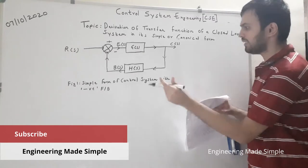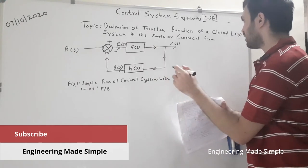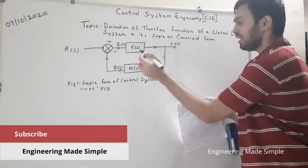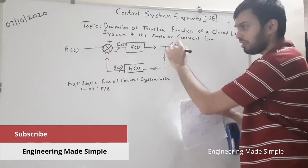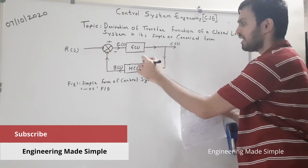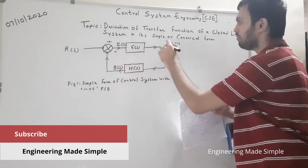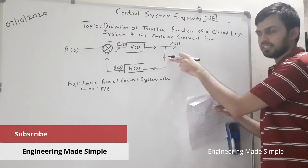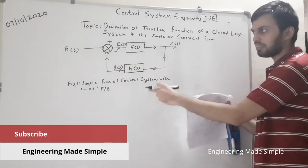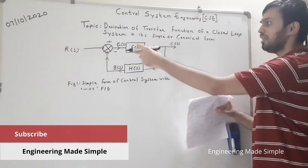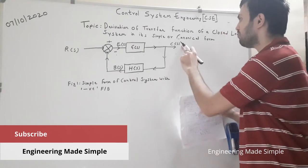This is a closed loop control system because it has feedback. It is known as simple or canonical form because there is only one block present in the forward path — the straight line path from the input node to the output node — and only one feedback element in the feedback path, one summing junction, and one takeoff point.